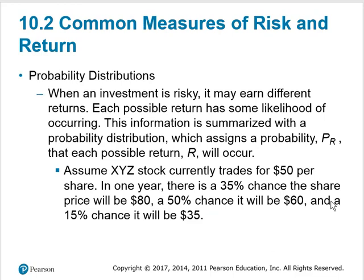The first thing we need to think about is probability distributions. Essentially, we're asking: what is the chance that a certain event will happen in the future? If investments are risky, then over different periods and based on different economic events, they will have differing levels of returns. For instance, let's assume that you currently have a stock that trades for $50, and next year you think there's a 35% chance...